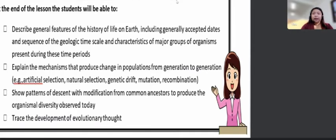And number 3: To show patterns of descent with modification from common ancestors to produce the organismal diversity observed today. So we will be comparing the different modifications made from the common ancestors of different living organisms.